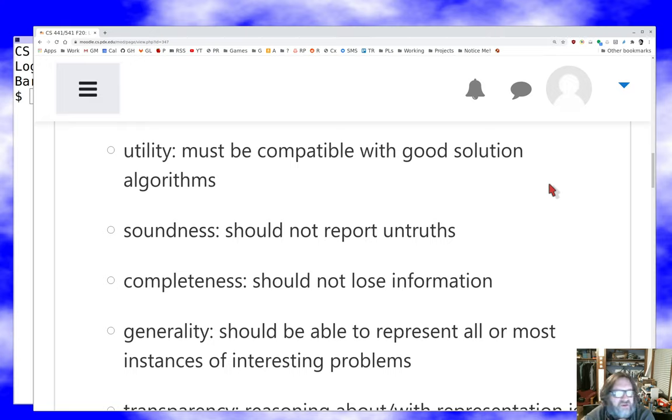I want the representation to be sound. I should never be in a situation where the representation tells me something about the problem that isn't true. For example, in a sliding tile puzzle problem I don't want two tiles sitting in the same square ever because that's not a thing that can happen in the real problem. I want completeness. I don't want to lose any information I've decided is important. So in a sliding tile problem, any representation of the state, I should always be able to find all the tiles and find out where they are.